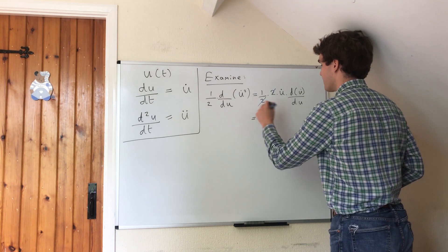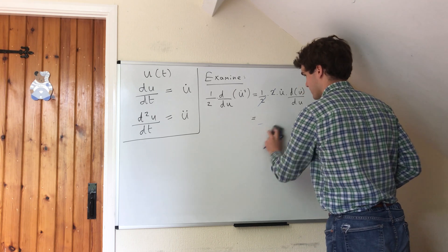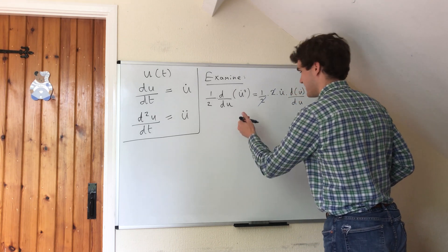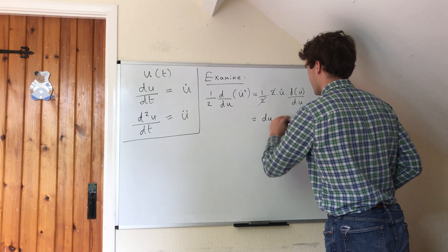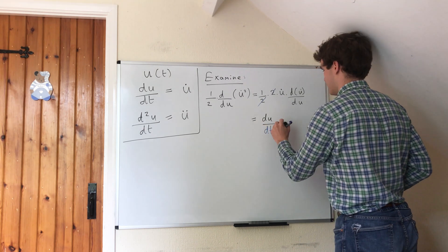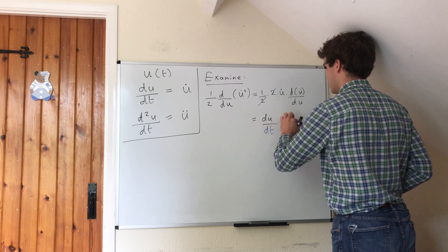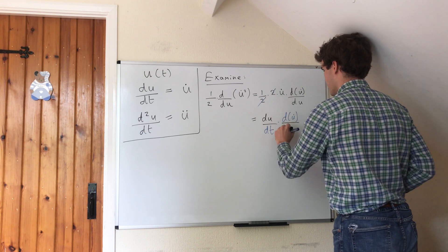We have du by dt, I'm going to do this black pen, red pen style, equal to du by dt times du dot by du.